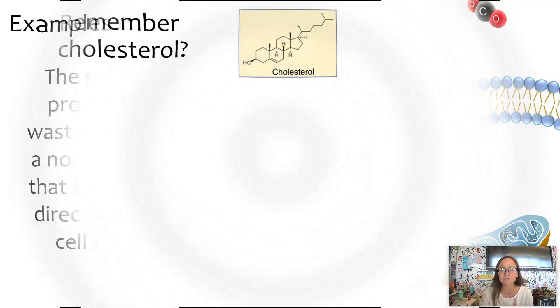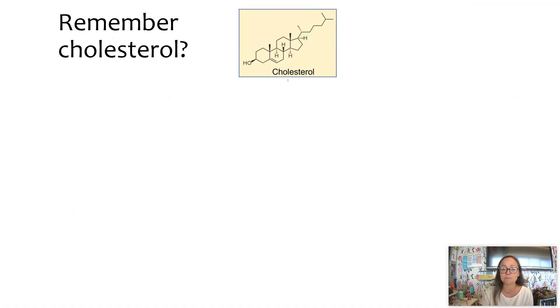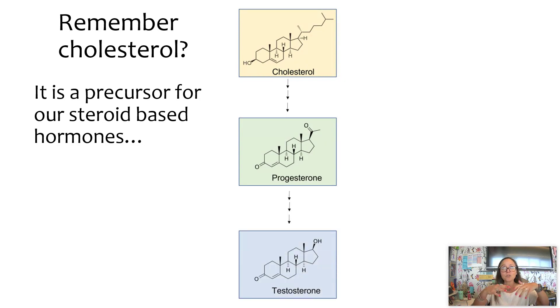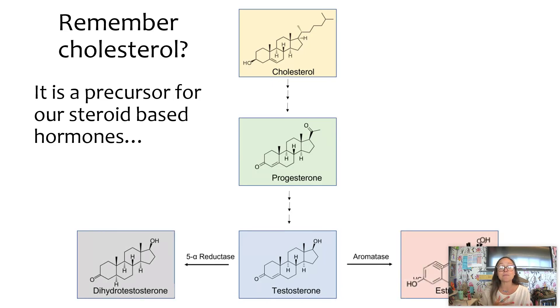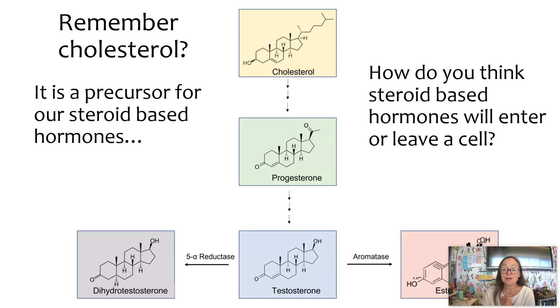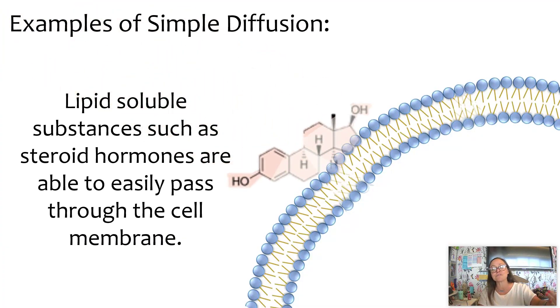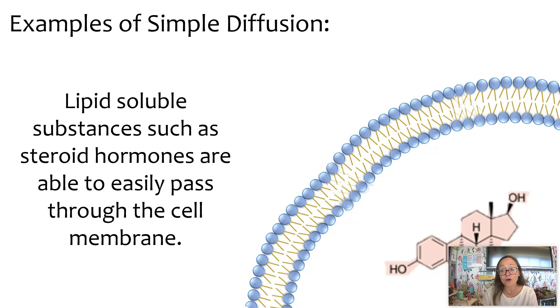Okay, now one more example that really ties into our unit 4 on cell communication is going to be our steroid-based hormones. So our steroid-based hormones are also nonpolar, hydrophobic. And so when we talk about these hormones, these chemical messengers, cholesterol is often a precursor. Precursor means it's like what they're made from. So you can see how progesterone, testosterone, estrogen are made from cholesterol. And cholesterol is a sterol, and a sterol is nonpolar, hydrophobic. So how do we predict that these steroid-based hormones will enter or leave a cell? It's going to be by simple diffusion. They're going to be able to cross right on through that lipid bilayer by simple diffusion because they also are nonpolar.